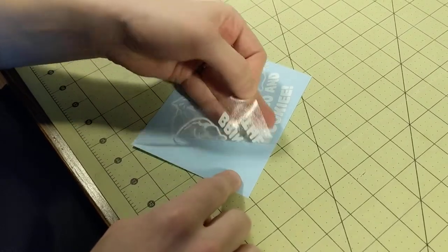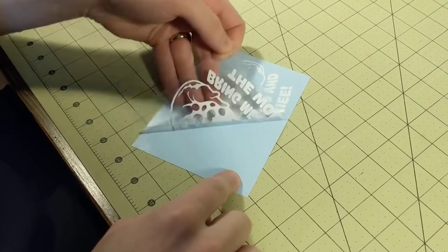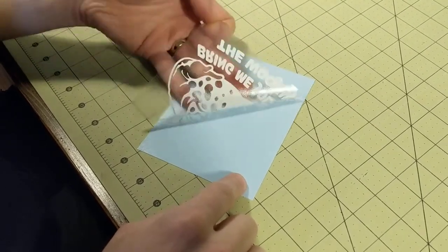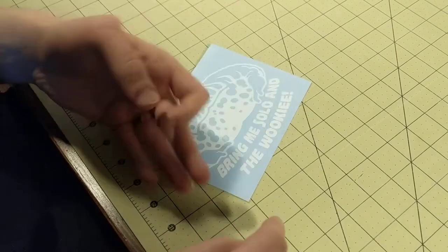And then just peel it back bit by bit until you get the whole decal up. And then eventually you get the whole thing up and then you'll be able to apply it without problem.